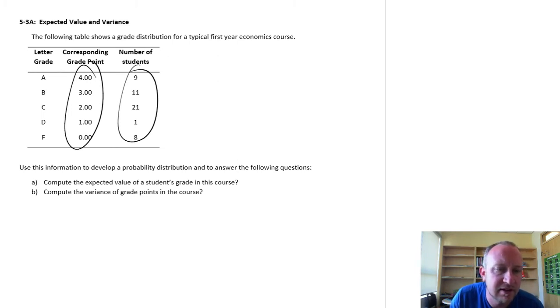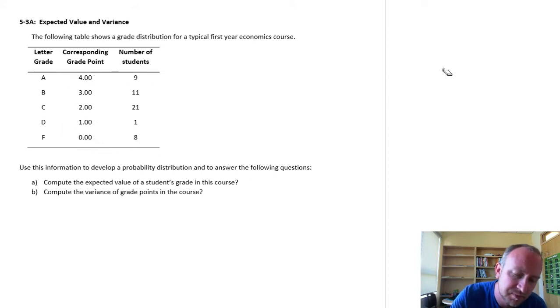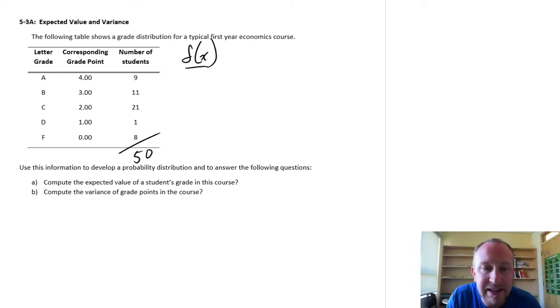Now in this class if we add up the number of students here I would have a total of 50 students, and so the first thing that we need to calculate are those relative frequencies. So here we'll get those frequencies, the probability associated with each of these grades.